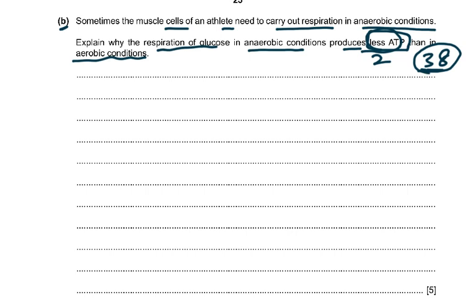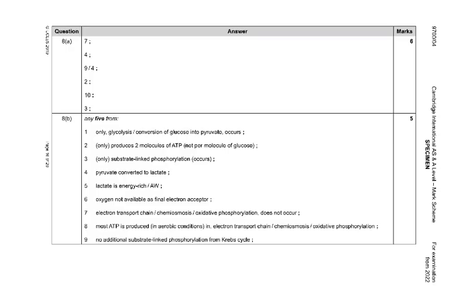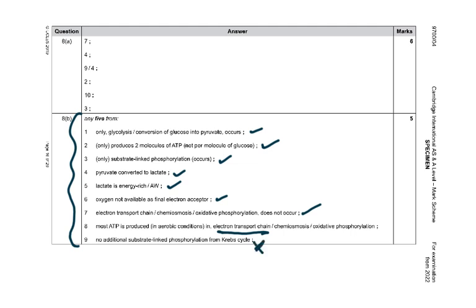Going through the mark scheme for 8b: only glycolysis — conversion of glucose into pyruvate — occurs, producing two molecules of ATP. In glycolysis you spend 2 ATP and get 4 ATP, so net gain is 2 ATP. Pyruvate is converted to lactate because it cannot enter the mitochondria. Lactate is still energy-rich and goes back to the liver after exercise. Oxygen is not available as the final electron acceptor, the electron transport chain does not occur, and no additional substrate-level phosphorylation occurs from the Krebs cycle.